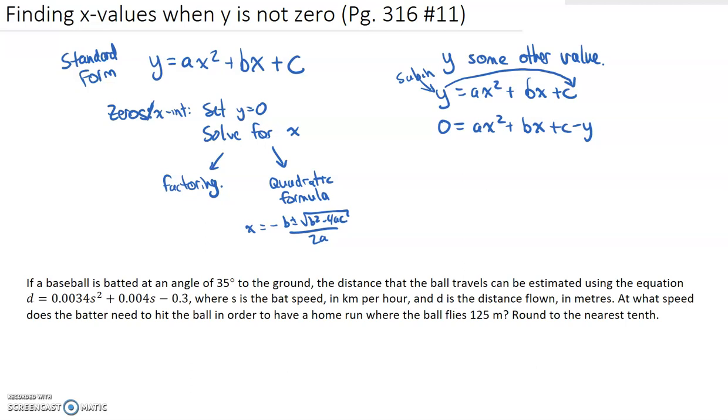The question says this: If a baseball is batted at an angle of 35 degrees to the ground, the distance that the ball travels can be estimated using the equation d equals 0.0034s squared plus 0.004s minus 0.3, where s is the bat speed in kilometers per hour, and d is the distance flown in meters. At what speed does the batter need to hit the ball in order to have a home run where the ball flies 125 meters? So there's our 125 meter number.